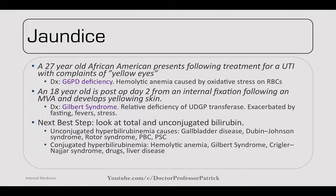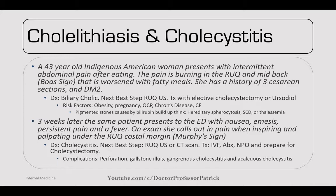Cholelithiasis and cholecystitis — a 43-year-old indigenous American woman presents with intermittent abdominal pain after eating. Burning pain in the right upper quadrant and mid-back (Boas sign), worsened with fatty meals. History of three C-sections and diabetes. Diagnosis: biliary colic. Next best step: right upper quadrant ultrasound. Treat with elective cholecystectomy or ursodiol. Risk factors include obesity, pregnancy, OCPs, and Crohn's disease.